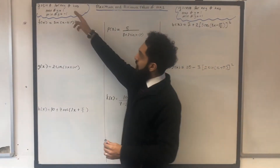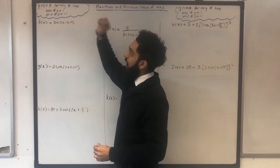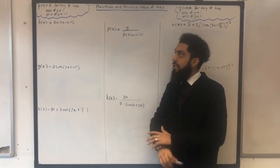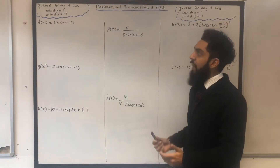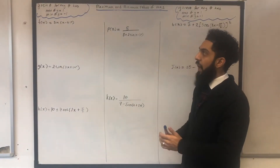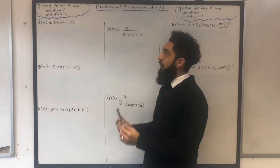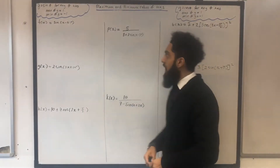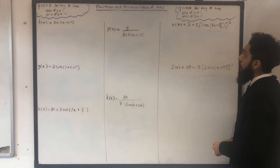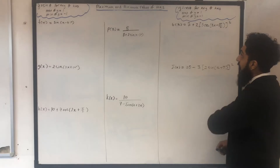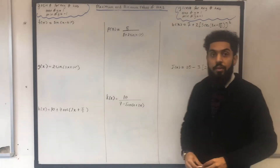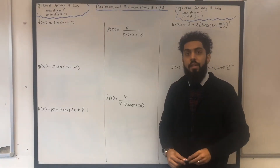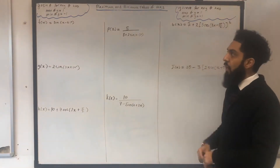We start with this statement: y equals sine theta — for any theta, it has a maximum value of y which is 1, and a minimum value of y which is minus 1. And this statement: y equals cos theta — for any theta, it has a maximum value of y which is 1, and a minimum value of y which is minus 1.